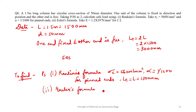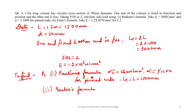For Euler's formula, the factor of safety is 2 and E is given as 1.2 into 10 raise to 5 Newton per mm² for cast iron. I have to be careful while using the formula because the value of LE is different for both methods.